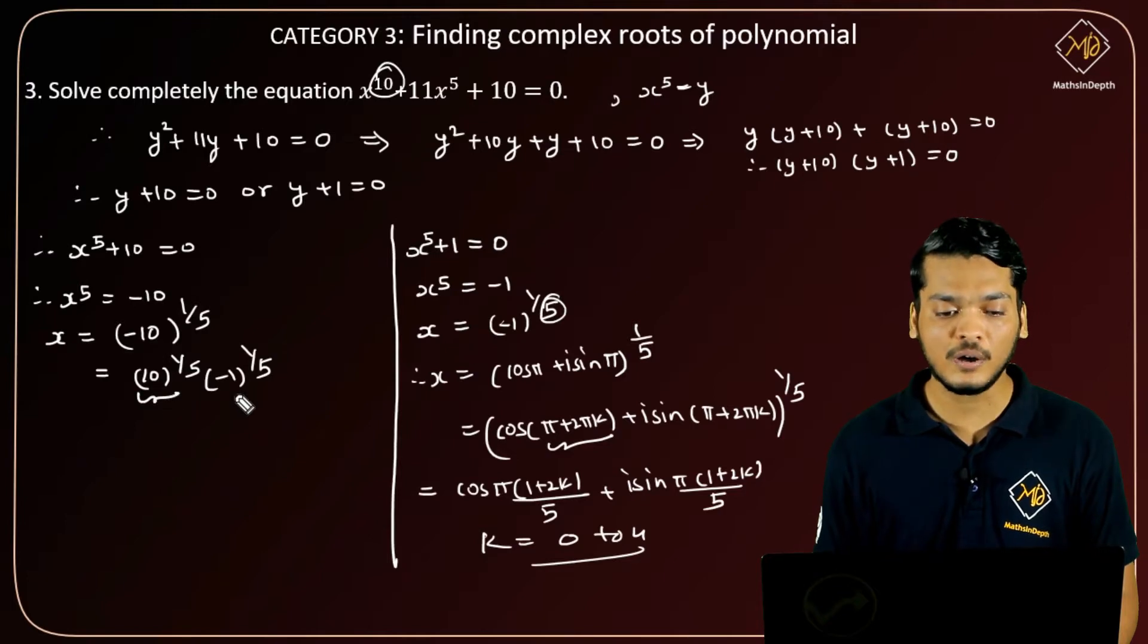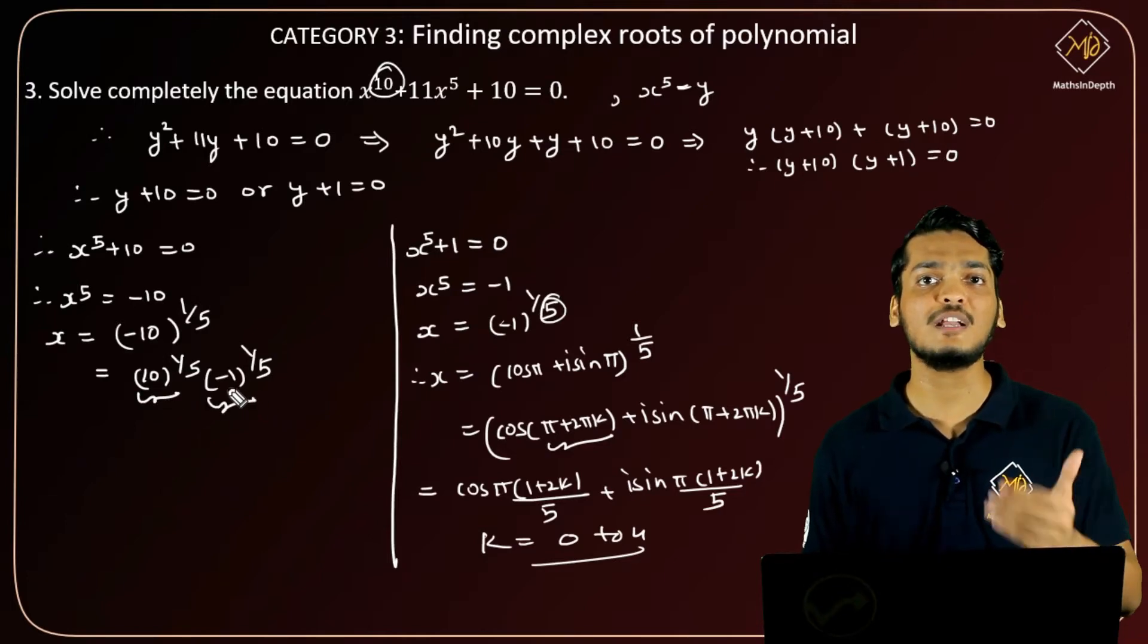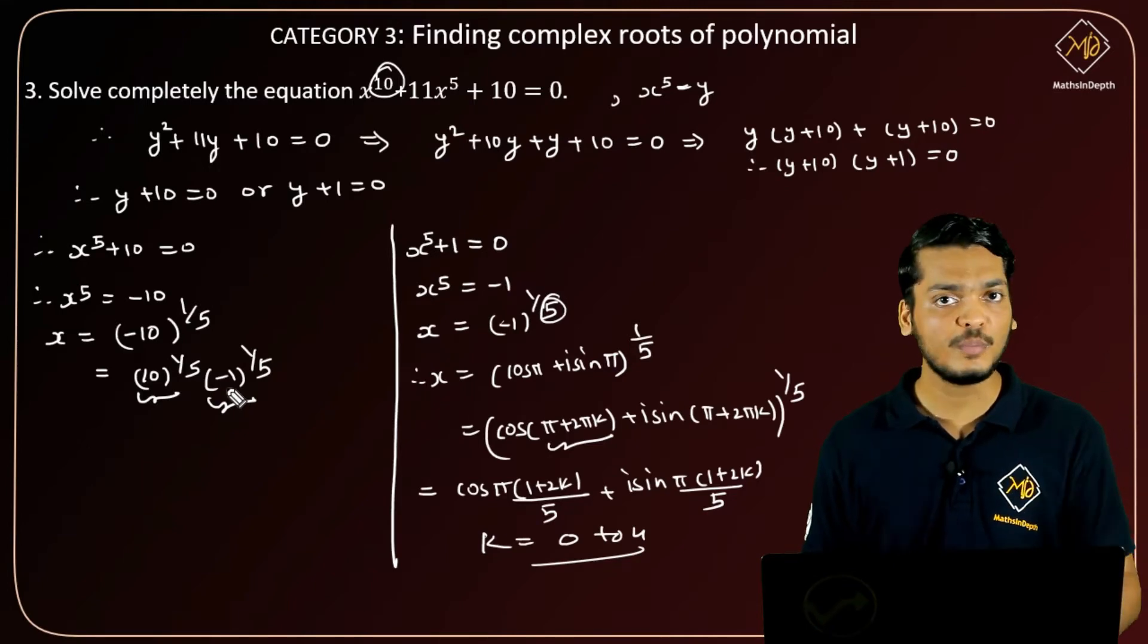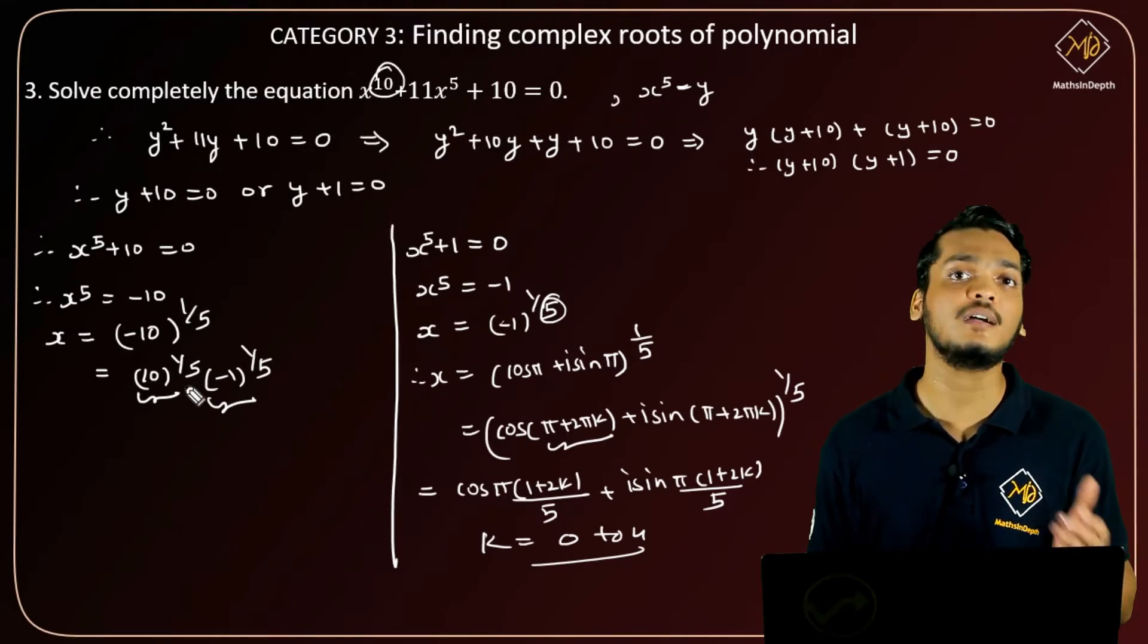Now this constant 10^(1/5) is going to remain. When we have (a + ib)^(1/n), this format with the constant is going to be preserved.